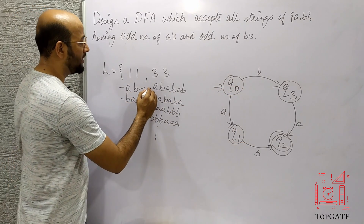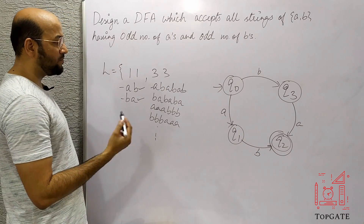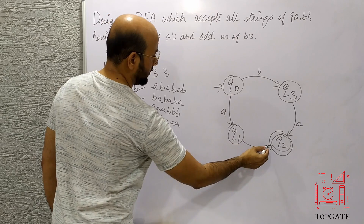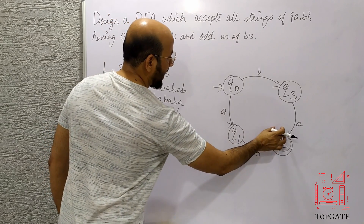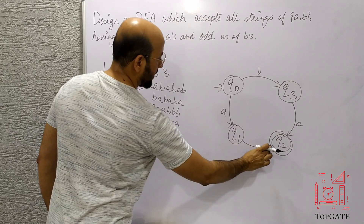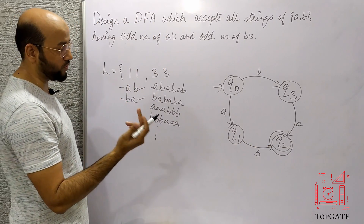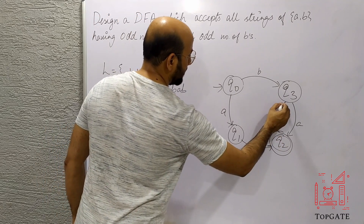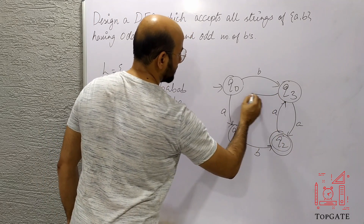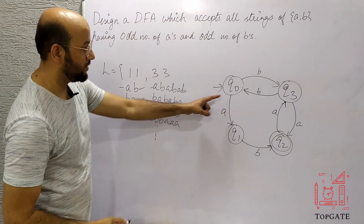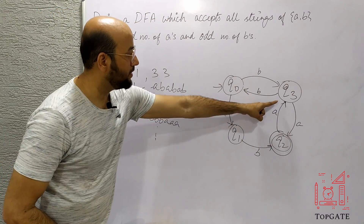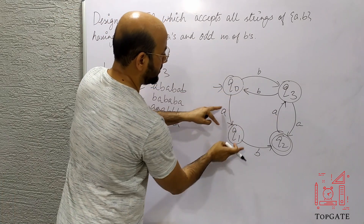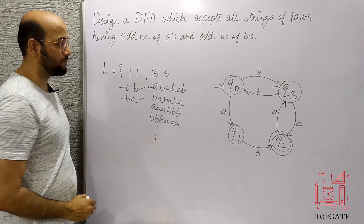Now consider the string ABABAB — that is 3 A's and 3 B's alternating. We already have the path for AB. If we add another AB loop, we can trace AB, AB, AB — that is three A-B pairs. So simply adding A, B transitions back brings us to the final state again, accepting the string ABABAB.